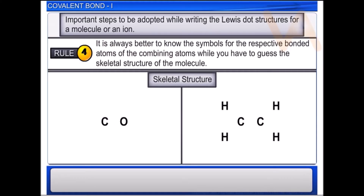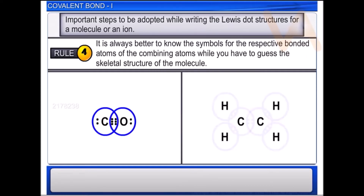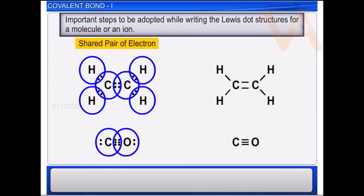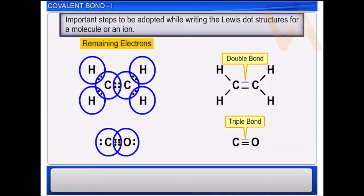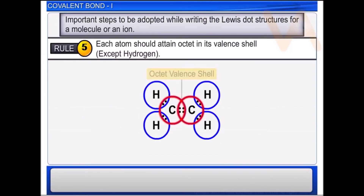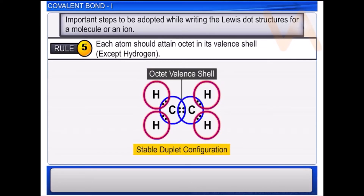While writing a Lewis structure, it is always better to know the symbols for the respective bonded atoms while you guess the skeletal structure of the molecule. This makes the distribution of electrons between the bonded atoms easier. Among the valence electrons available for bonding, a shared pair forms a single bond between two bonded atoms, and the remaining electron pairs are either used for the formation of multiple bonds or remain as lone pairs. Finally, each atom should attain octet in its valence shell, except hydrogen which attains the stable duplet configuration.